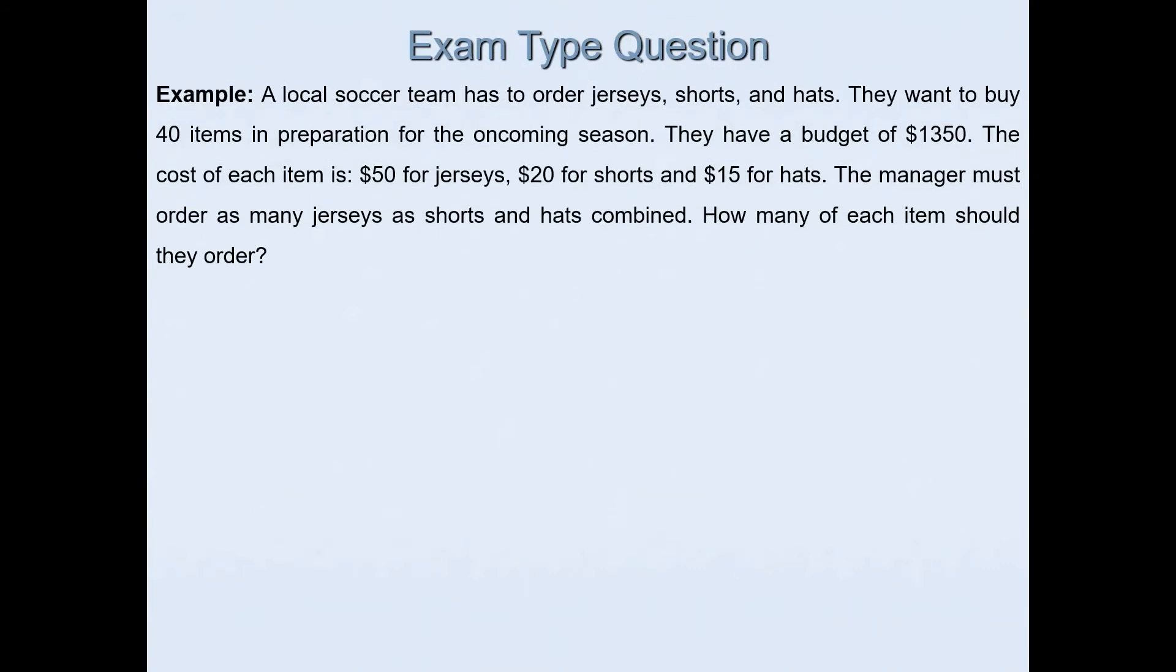In this question, a local soccer team has to order jerseys, shorts and hats. They want to buy 40 items in preparation for the oncoming season. They have a budget of $1,350. The cost of each item is $50 for jerseys, $20 for shorts and $15 for hats. The manager must order as many jerseys as shorts and hats combined. How many of each item should they order?